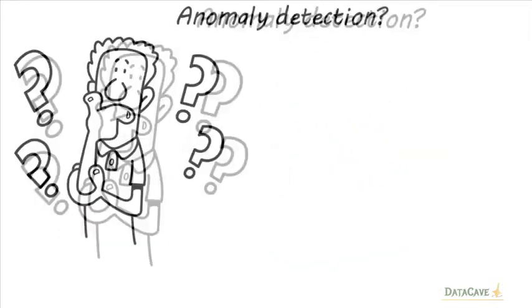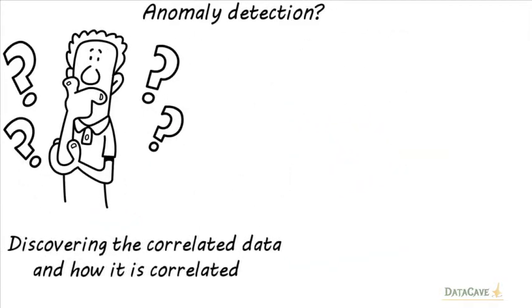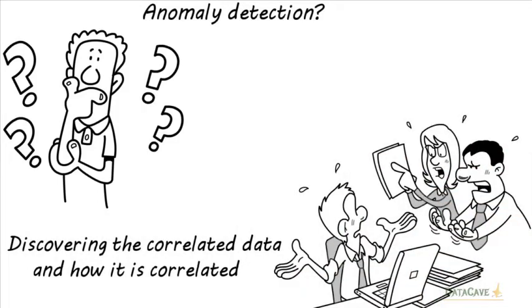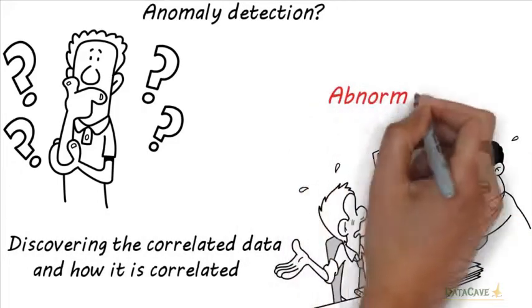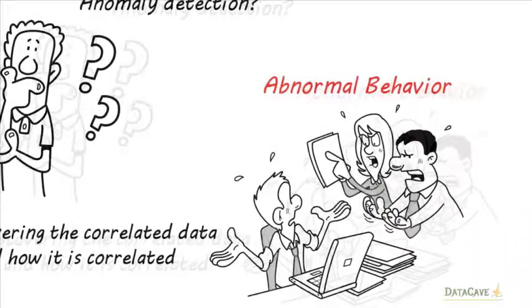What is anomaly detection? Anomaly detection is a process that discovers and exposes abnormal behavior by correlating a series of data events. Let's explain it with an example.